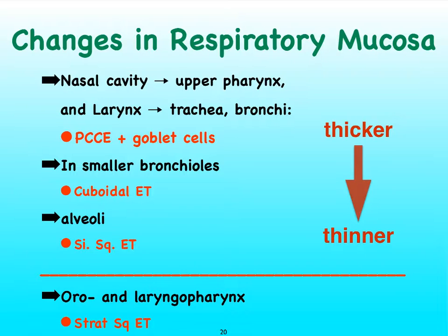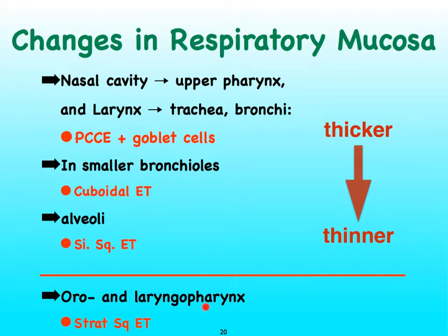And finally, when we get to the alveoli, we have simple squamous epithelial tissue. Don't forget that the alveoli are already part of the respiratory zone — they're not part of the conducting zone. Now, there are some exceptions: the two regions of the pharynx, the oro- and laryngopharynx, are structures that have a dual function, meaning they serve as passageways for both air and food, and consequently they are lined with stratified squamous epithelial tissue.